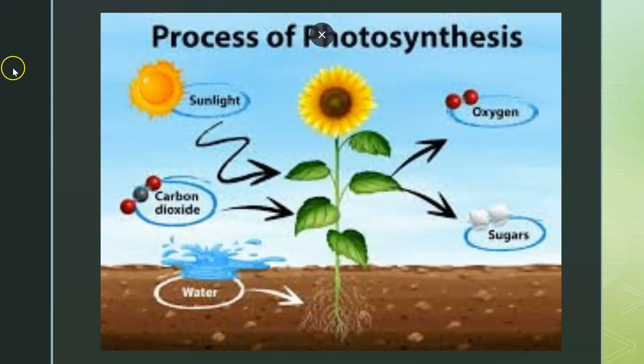First of all, this is the process of photosynthesis. We have three things go in and two things come out. Remember, photosynthesis means photo means light, synthesis means to make something from light. So we have three things go into photosynthesis: sunlight, carbon dioxide that we breathe out, and water going into our plant, which is an autotroph.